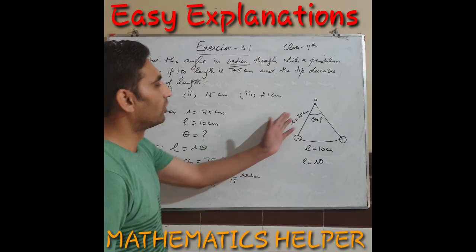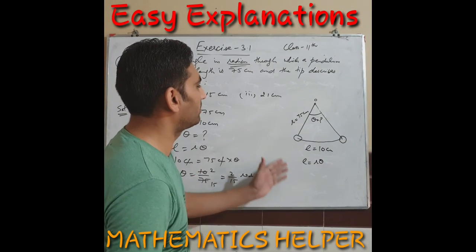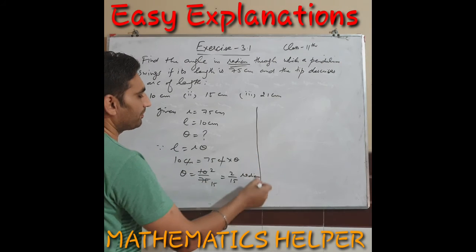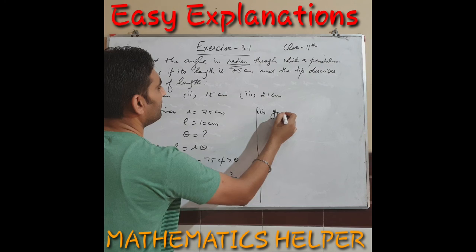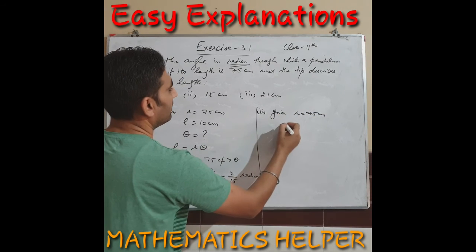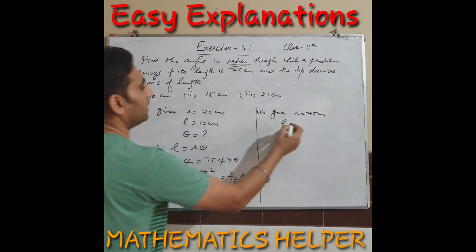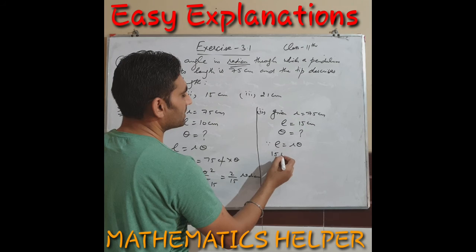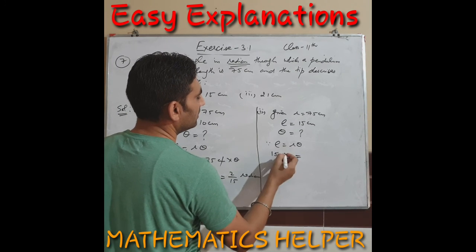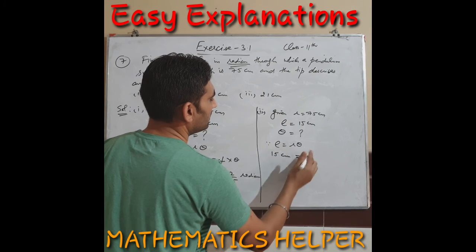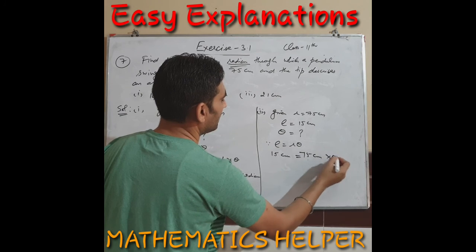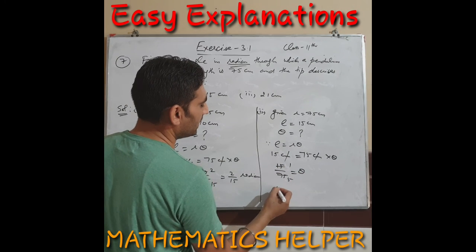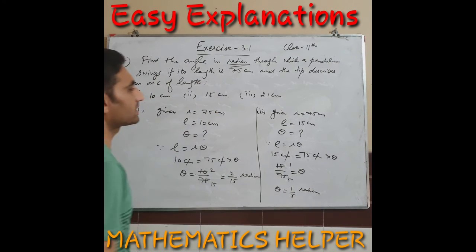Part two: r = 75 cm, l = 15 cm. Using l = rθ: 15 = 75 × θ. So θ = 15/75 = 1/5 radian. This is the answer to part two.